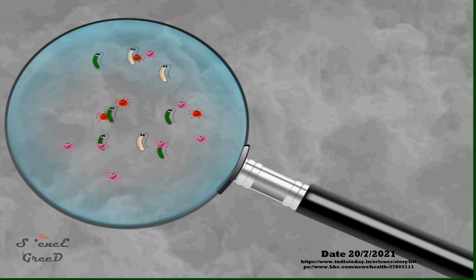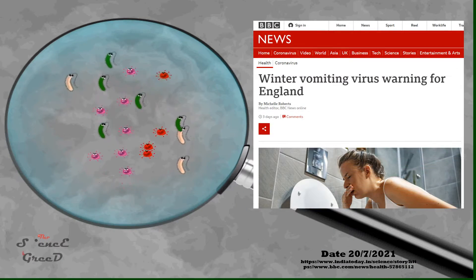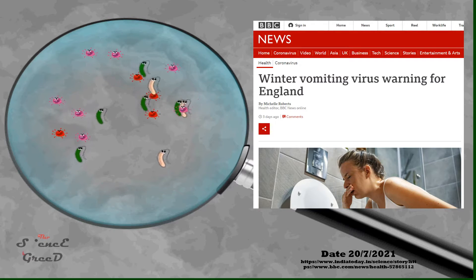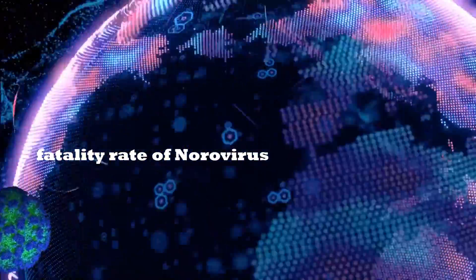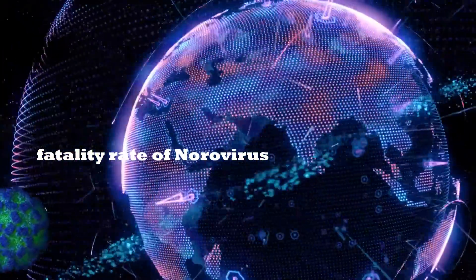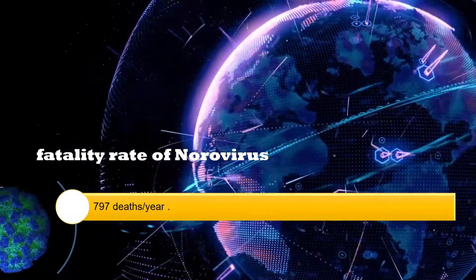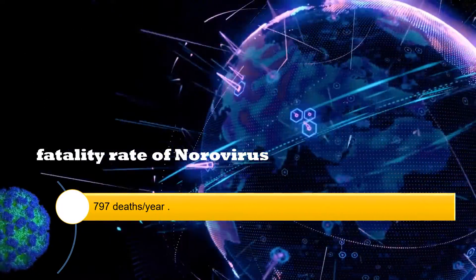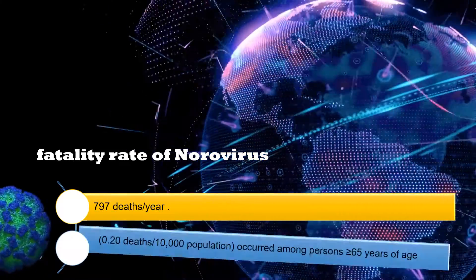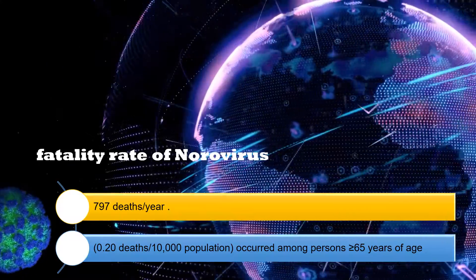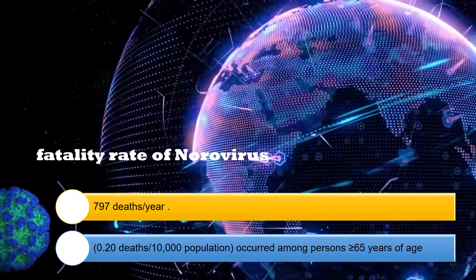Public Health England says 154 norovirus outbreaks have been reported in the last five weeks, compared to an average of 53 over the same time period in the previous five years. It is estimated that norovirus is associated with an average of 797 deaths per year. Most, 90%, of these norovirus-associated deaths and the highest mortality rate, 0.20 deaths per 10,000 population, occurred among persons greater than 65 years of age.